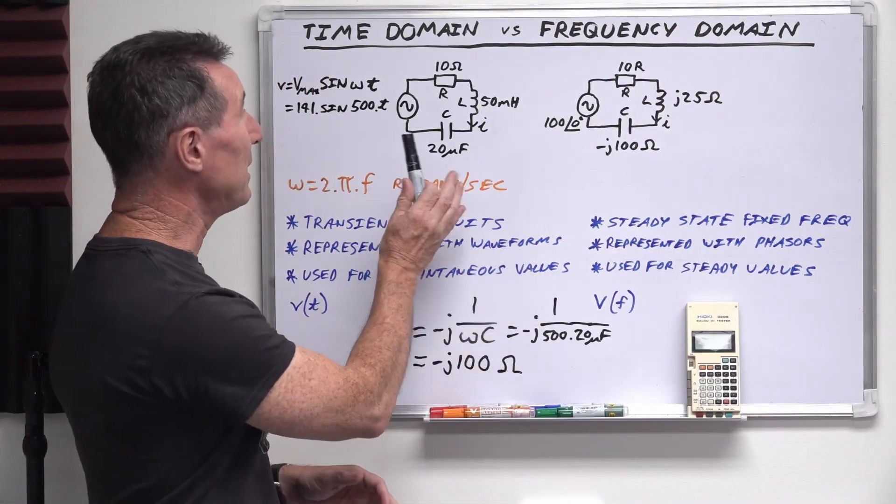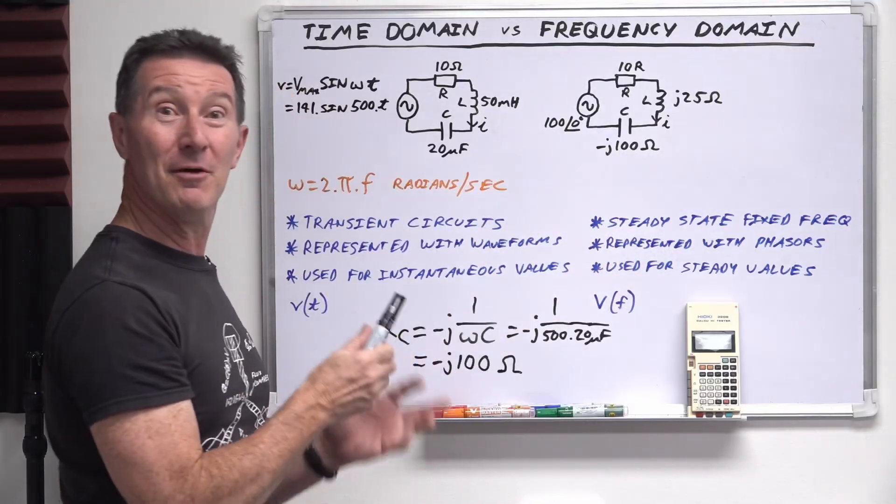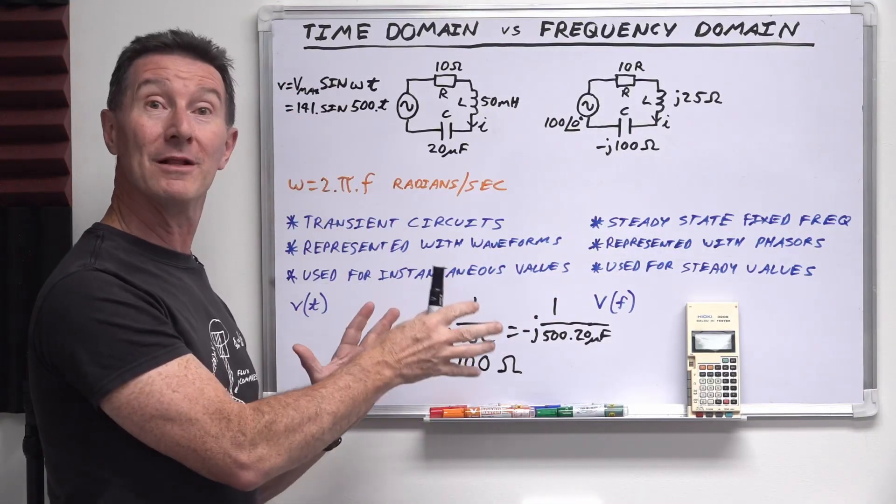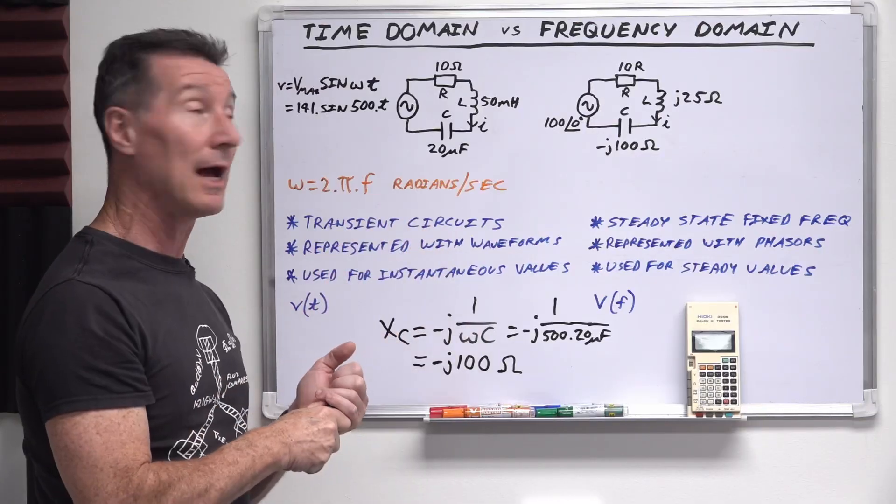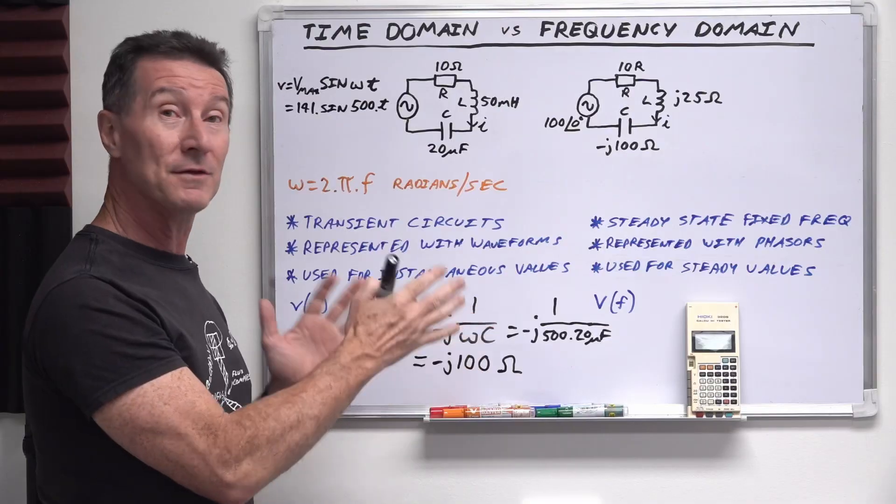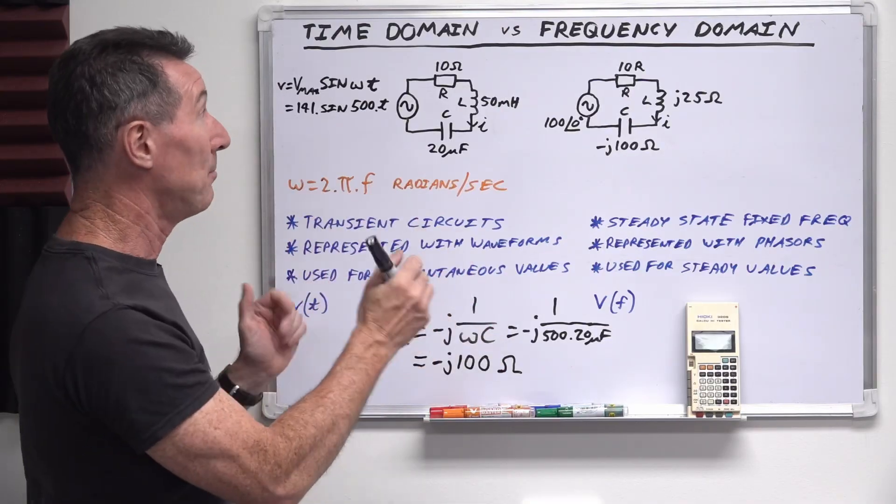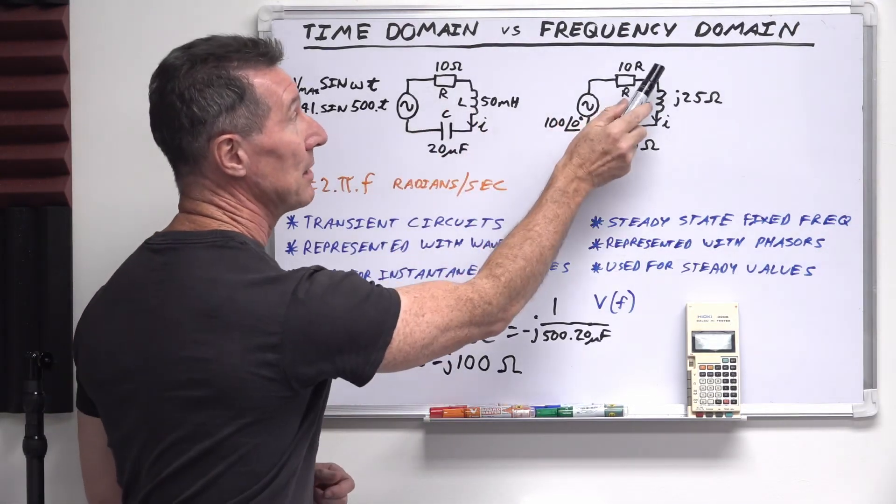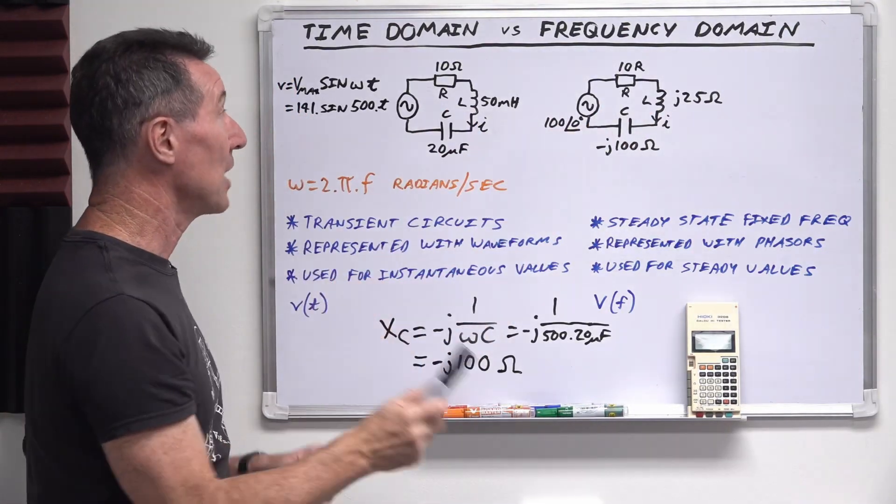So converting between a time domain and frequency domain is really easy. We just use the reactants formulas that we had in the previous video. Now, of course, ohms is going to stay the same because it's a linear component that doesn't, that isn't affected by frequency. So our 10 ohms simply becomes 10 ohms over here. Nothing changes.